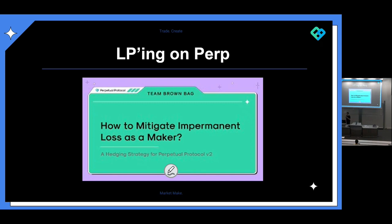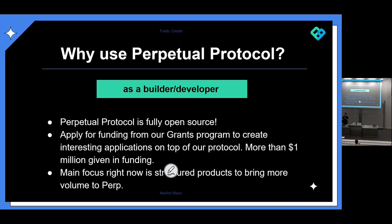Options can be complicated, and an easier way to hedge would be volatility futures. Derive actually has an upcoming devol product — volatility futures that track market volatility and allow you to hedge against impermanent loss, also known as divergence loss. Another reason you might want to use Perpetual Protocol is as a builder or developer.